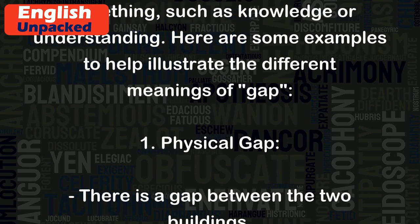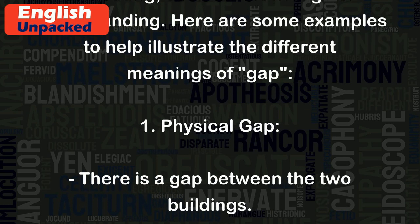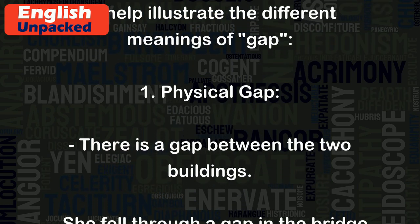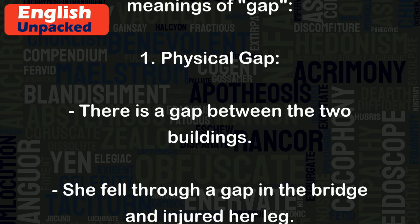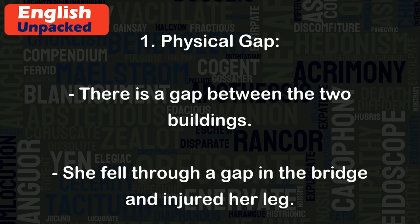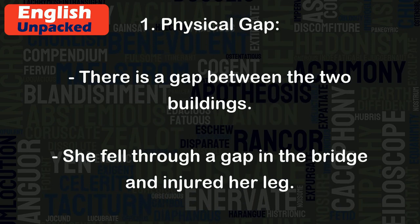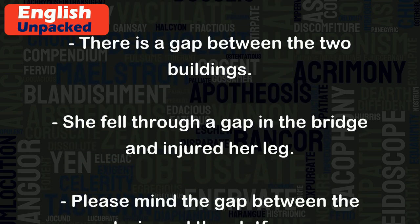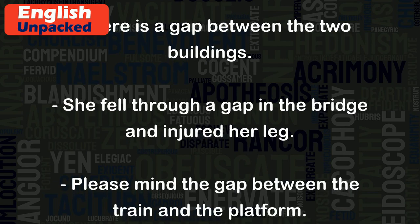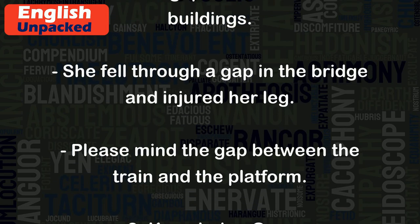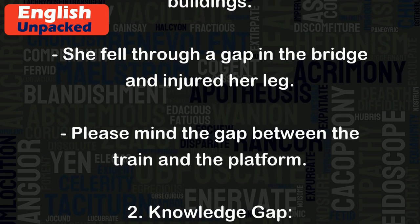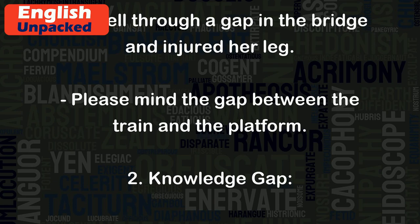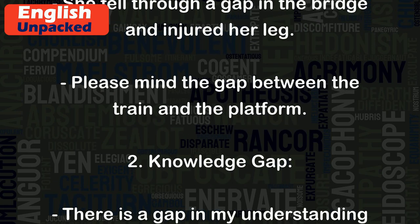Here are some examples to help illustrate the different meanings of 'gap.' Physical gap: There is a gap between the two buildings. She fell through a gap in the bridge and injured her leg. Please mind the gap between the train and the platform.